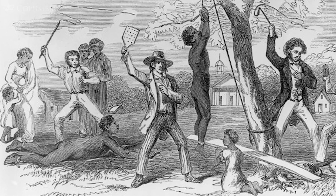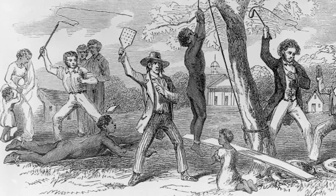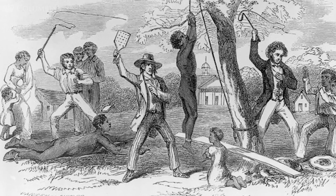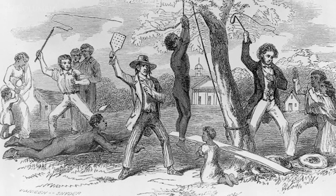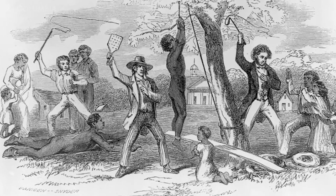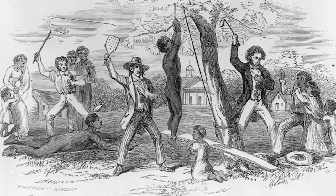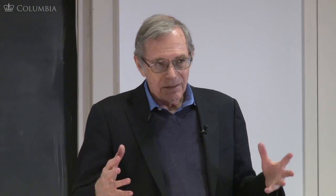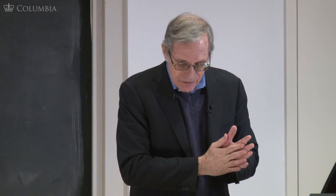With all that, it's important to remember that at the heart of the system is just violence — physical brutality. This is an abolitionist image of a black person hung from a tree and another being whipped on the ground. The physical violence is at the core of the maintenance of the slave system.